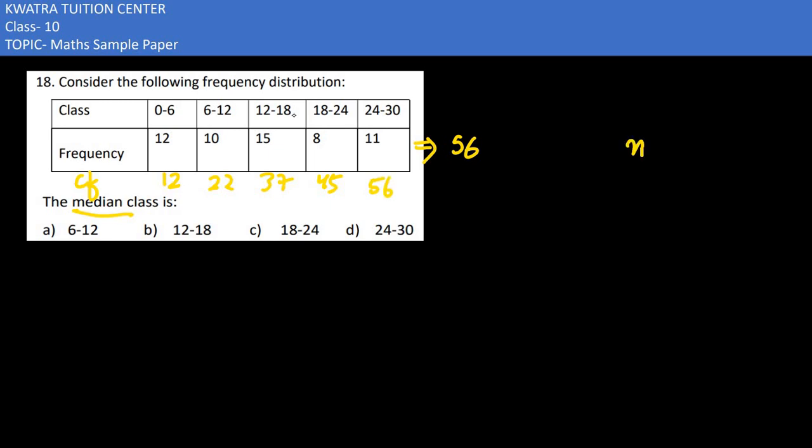Now, what do we need to do? Total frequency, we need to divide by 2. If you divide by 2, you will get 28. Now, which cumulative frequency is greater than 28? 37 and the rest.